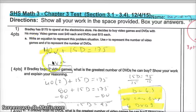So the correct answer is $40 per video game, so 40V, plus 15D. $15 per DVD equals $175.